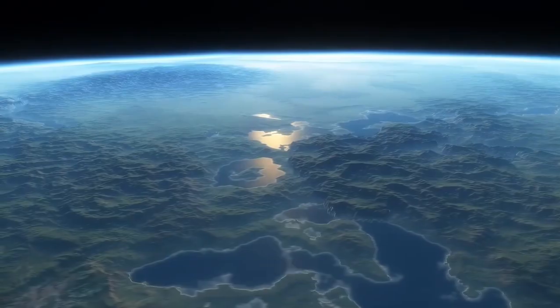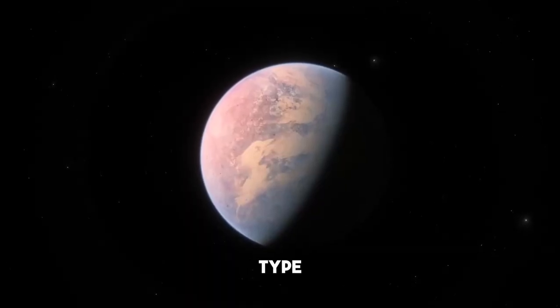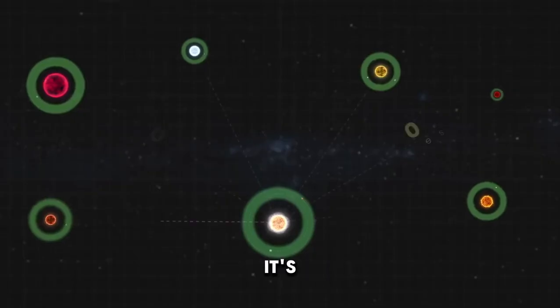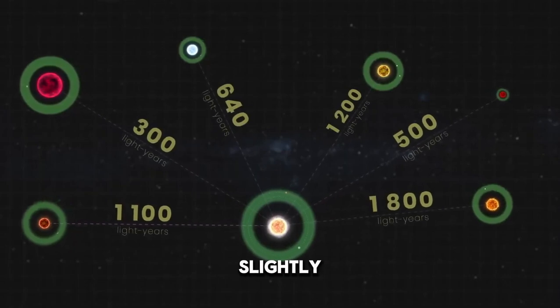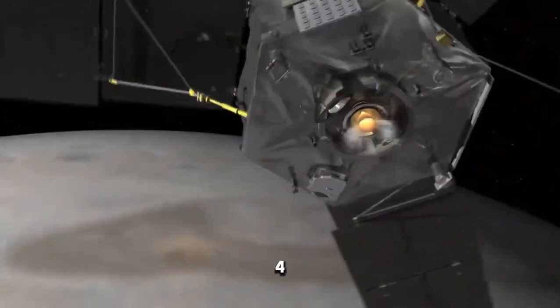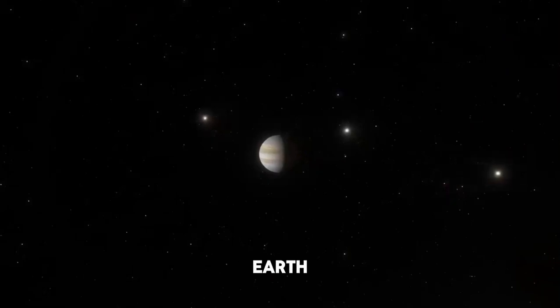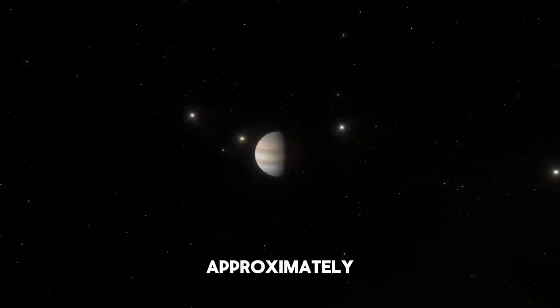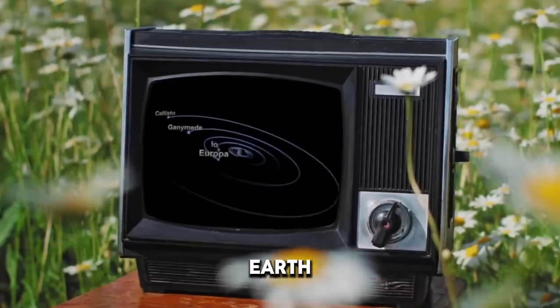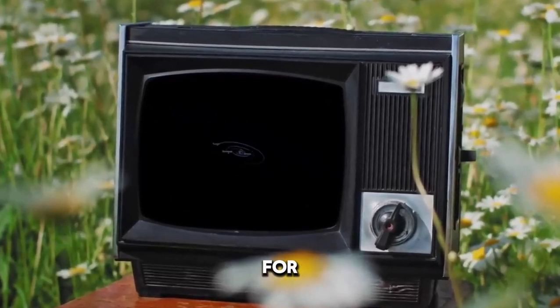Like our Sun, Kepler-452 is a G-type star with a similar temperature, though it's older. It's brighter and slightly larger than our Sun, and Kepler-452b receives about 10% more sunlight than Earth. This exoplanet is approximately 1.6 times the size of Earth, making it a strong candidate for a rocky planet.